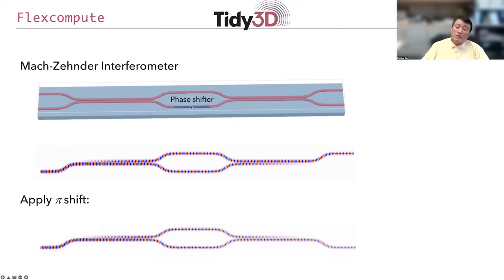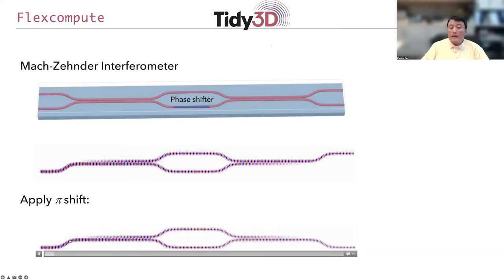Now to demonstrate the switch behavior, you can change the phase shifter dielectric function. And in which case, as the wave goes through the device, it's perfectly routed, but now to the bottom waveguide. So the system really behaves as an excellent optical switch.